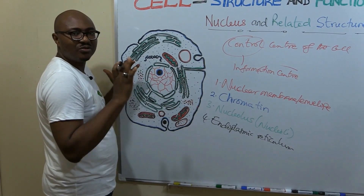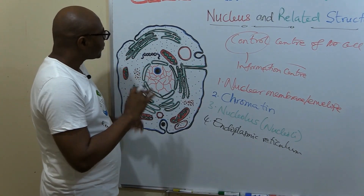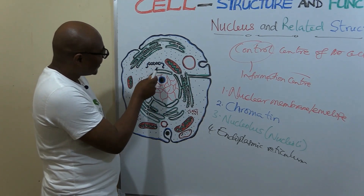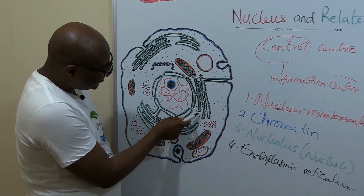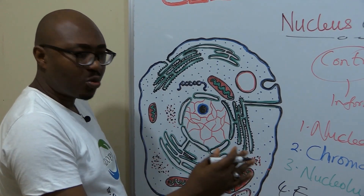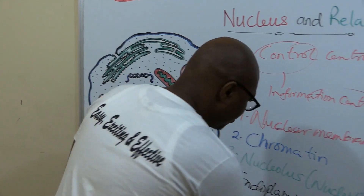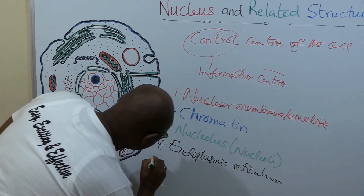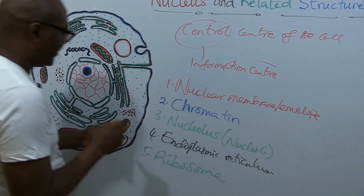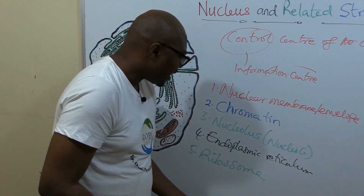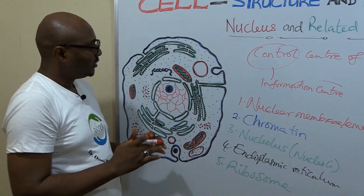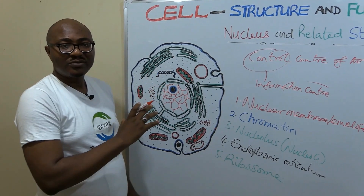If you look at the endoplasmic reticulum, it's a separate cell organelle by itself, but it's closely related to the nucleus. You also see a lot of dots connected to this endoplasmic reticulum — those are called ribosomes.